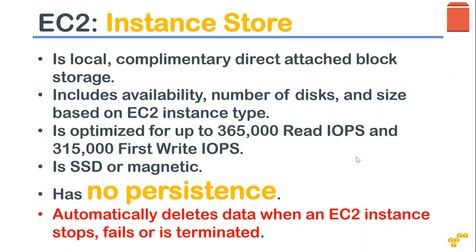If you have that kind of workload — say big data workloads — what typically happens is the actual data is stored in some database or long-term archival storage, but the data you want to process is copied onto another disk where processing happens. If that data processing fails, you still have your source data in long-term storage. In those cases, Instance Store makes a very good use case for getting a high amount of IOPS for both read and write.